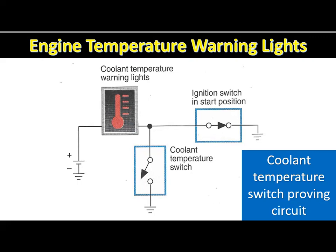If the coolant temperature increases to a specific overheated condition, the bimetallic strip bends and closes the contacts in the sending unit. As long as the overheated condition is present, the sending unit contacts remain closed and the temperature warning light is on. Many temperature warning lights have a proving circuit in the ignition switch — when the switch is in the start position, it grounds the temperature warning light, illuminating it while cranking to prove the bulb is operating.